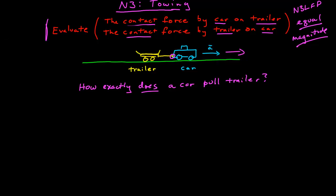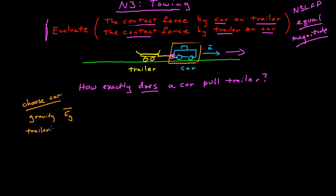The first thing I'm going to do is apply Newton's second law to each of these objects. So the first thing is to choose one object — I'm going to choose the car. My first object is the car. The next thing is to identify the forces on the car. There's gravity on the car; I'll call that FG. What else is in contact with the car? There's the trailer, so the trailer exerts a contact force on the car. I'll call that the normal force of the trailer on the car.